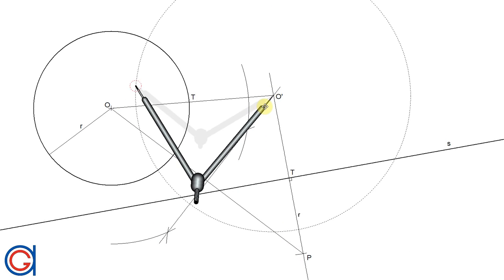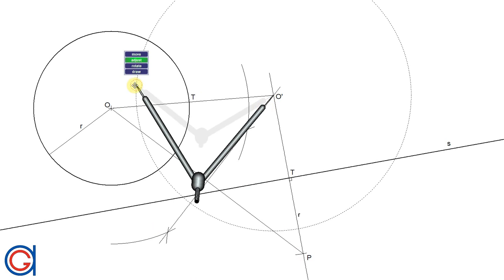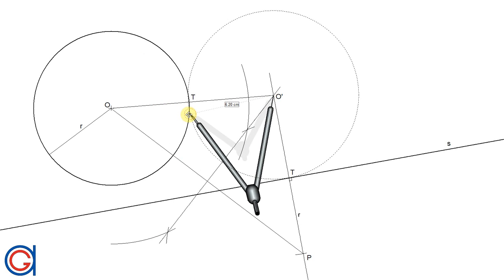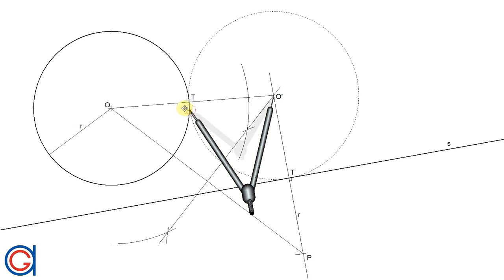Finally, getting our compass and setting it on O prime to a radius O prime T, we will link the given circle to the given tangent point on our given line S in a thicker line, as can be seen here.